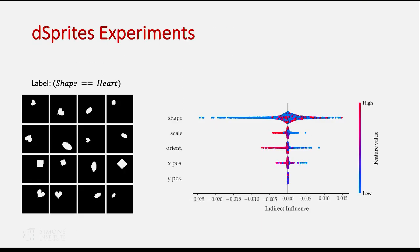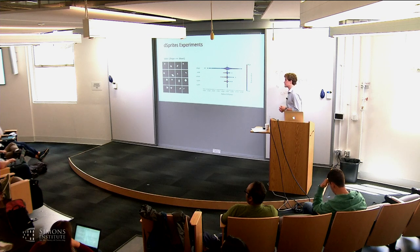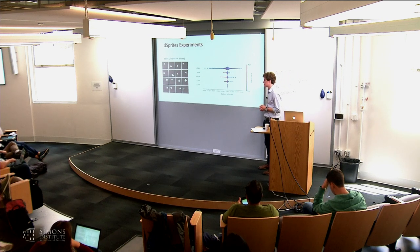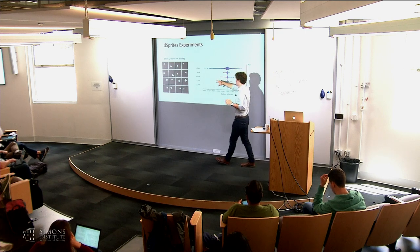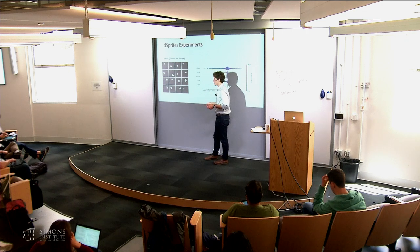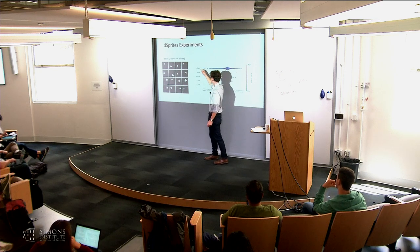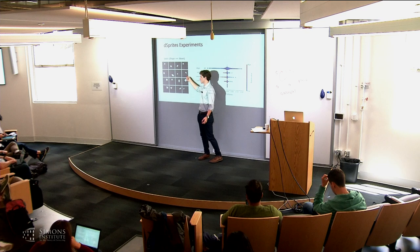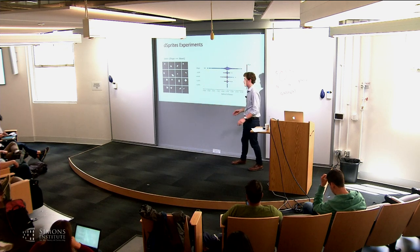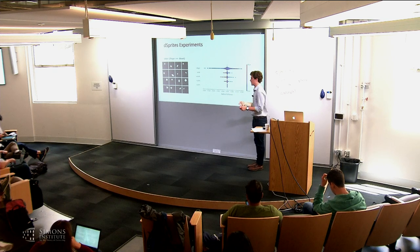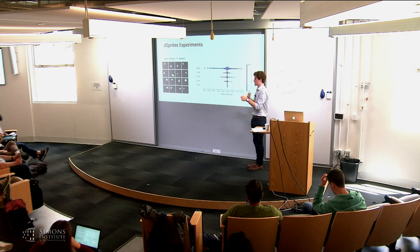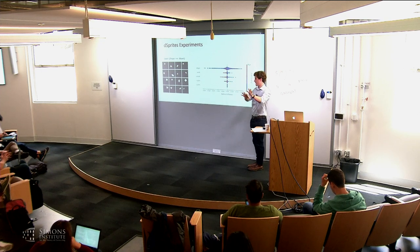In response to a question: shape, scale, and orientation are labels determined by how the image was generated — for each instance in the dataset, it has a shape, scale, orientation, x-position, and y-position, and using that information it generates the photo. We're not trying to learn all five latent factors simultaneously. We just say: what is the information of shape and what is everything else? There are just two elements in our disentangled representation. Then we throw that out, start over, and ask: what is scale? What is everything else? A separate disentangled representation is trained for each feature we want to audit.